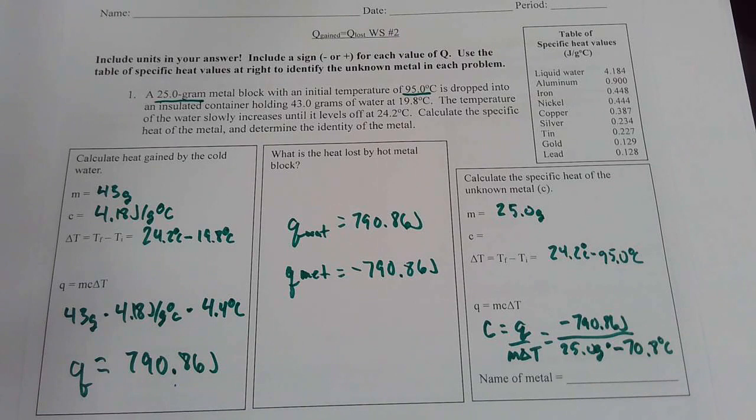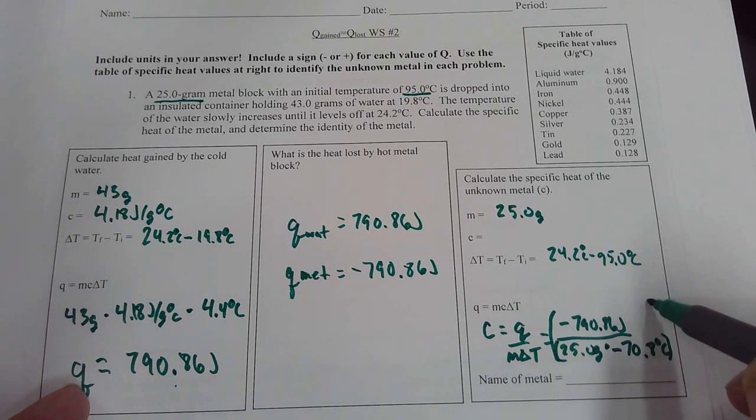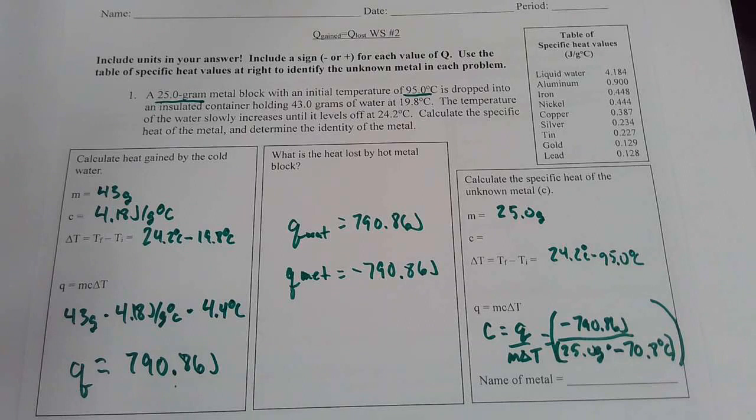So I'm going to have a double set of parenthesis. So open parenthesis negative 790.86 divided by open parenthesis again 25 times negative 70.8 close parenthesis twice. And we end up with C is equal to 0.447.